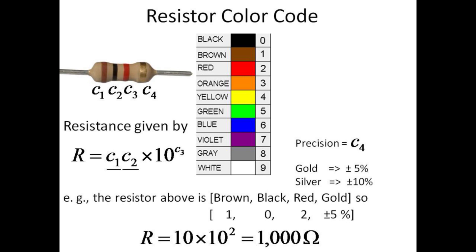Resistors are marked with three color bands and a fourth precision band. Each of the three color bands represents a digit from 0 through 9, with black representing 0, brown representing 1, then the rainbow of colors ROYGBIV ending with gray and white representing 8 and 9 respectively.